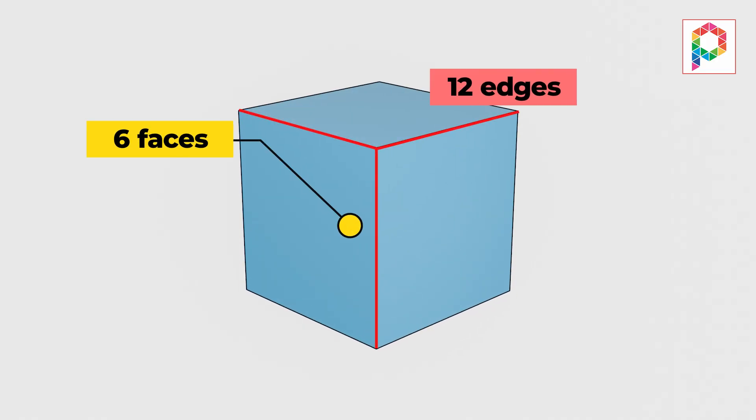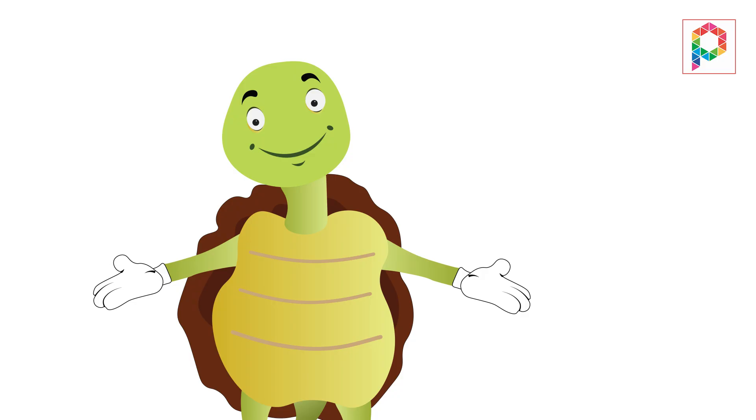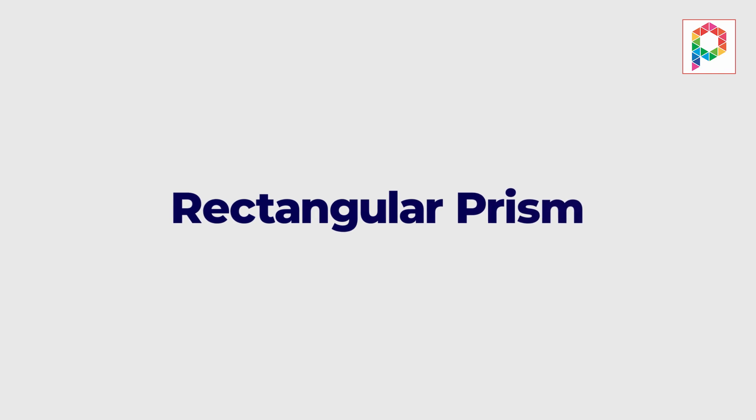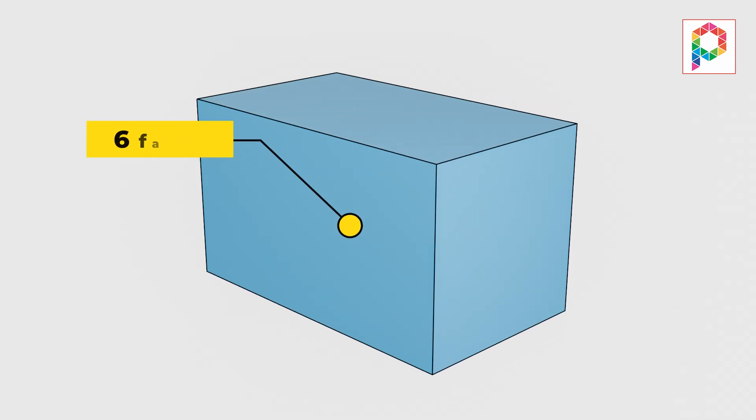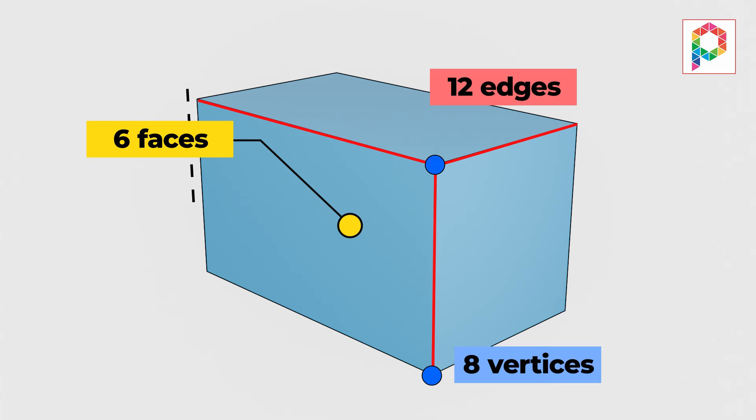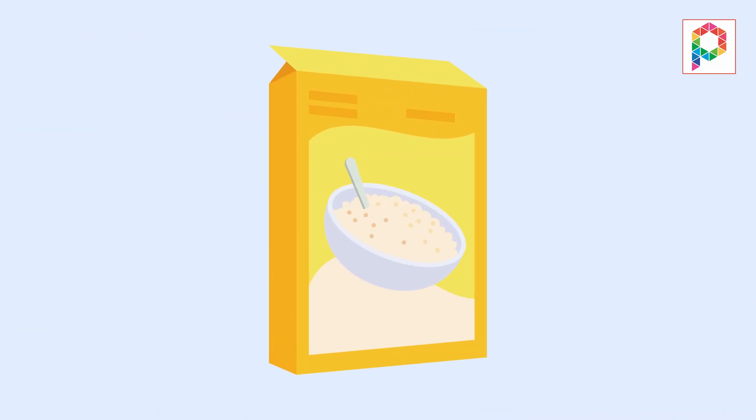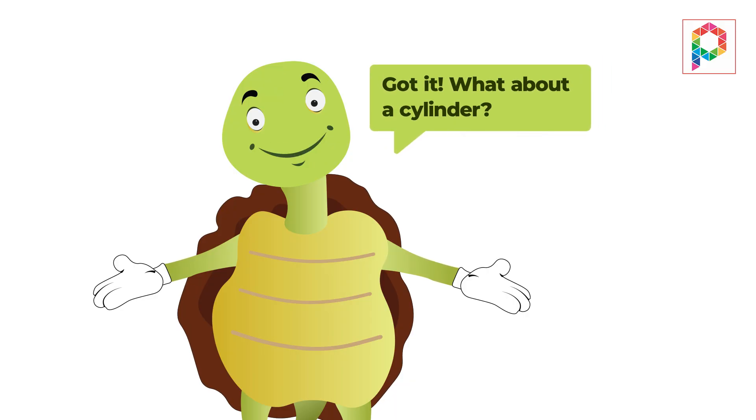A cube has 12 edges and eight vertices. That's a lot of parts! What's next? A rectangular prism. It also has six faces, 12 edges, and eight vertices, but the faces can be rectangles like a cereal box. Got it! What about a cylinder?